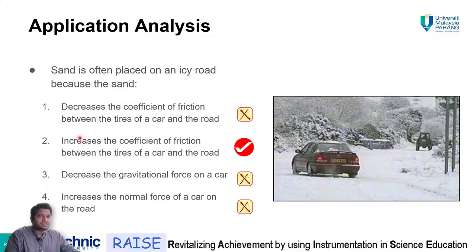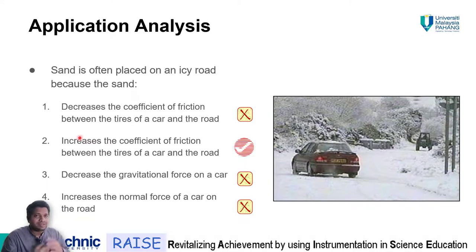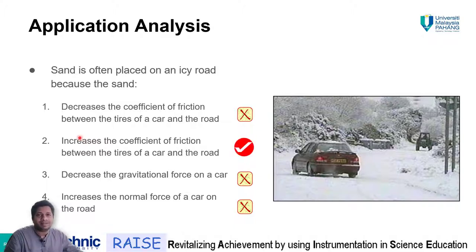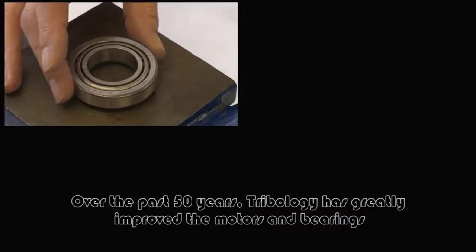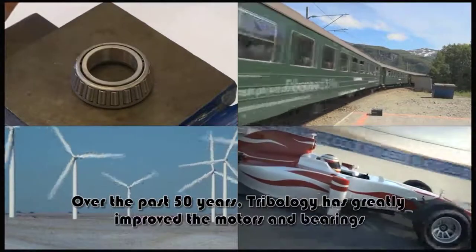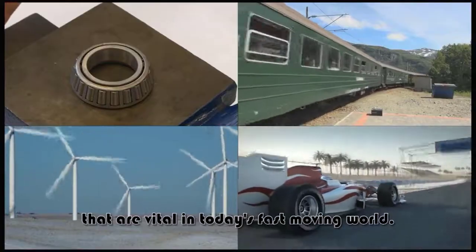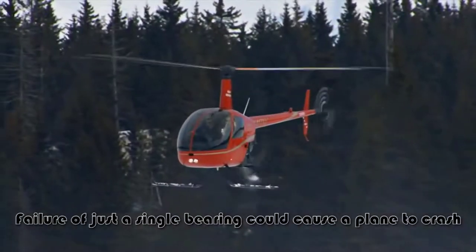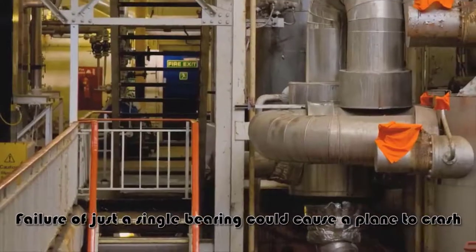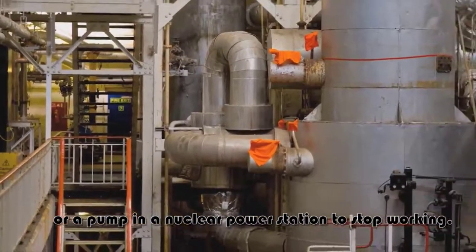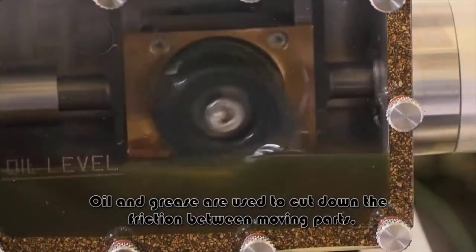In manufacturing, processes such as forging, casting, extrusion, blanking, and billeting all involve tribological considerations. Over the past 50 years, tribology has greatly improved motors and bearings vital in today's fast-moving world. A failure of just a single bearing could cause a crane to crash or a pump in a nuclear power station to stop working. Oil and grease are used to reduce friction between moving parts.